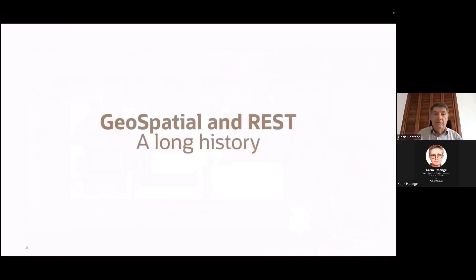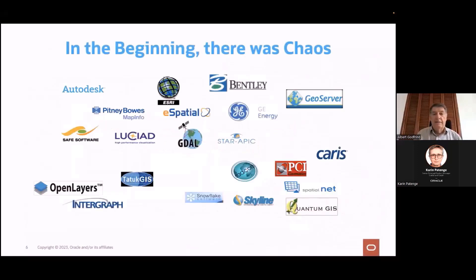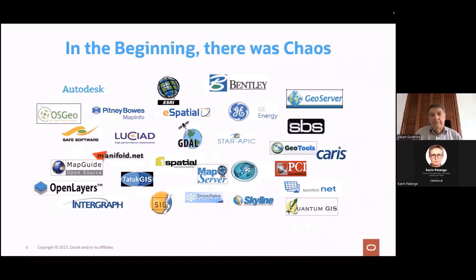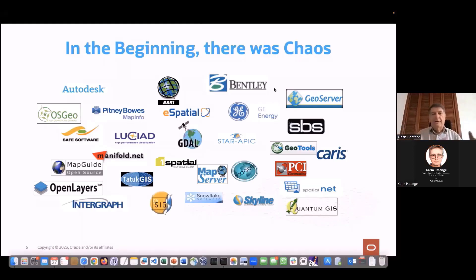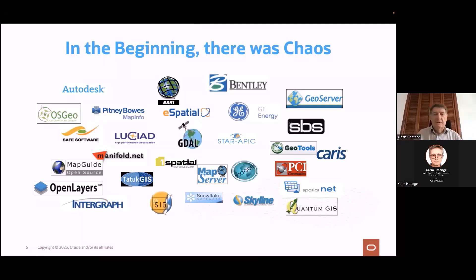Geospatial and REST: a long history. This has been going on for a long while. In the beginning, there was chaos — lots of icons here, lots of companies. Some of them are no longer there. The geospatial world has always been very fragmented: lots of actors, each one with their own APIs, their own standards, their own way of doing things, and their own storage formats. In many applications, people would use multiple of these tools and go into an endless operation of converting data from Esri to Autodesk to Bentley, and then to use an open source tool like GeoServer. That's really a waste of time, and all this coming and going means that eventually data loses quality.